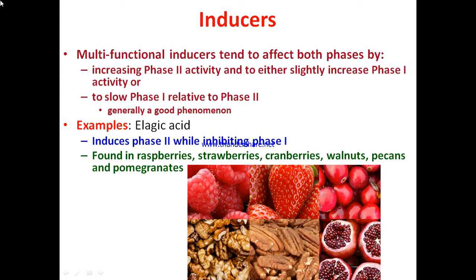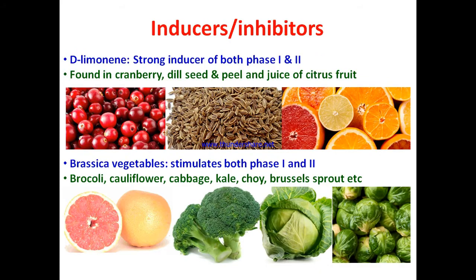Ellagic acid is an example of a multifunctional inducer — it induces phase two while inhibiting phase one. Ellagic acid is present in fruits and nuts like raspberries, strawberries, cranberries, walnuts, pecans, and pomegranates, so daily consumption of these foods provides better biotransformation efficiency. D-limonene is another strong inducer of both phase one and two, and is found in cranberry, dill seed, and the peel and juice of citrus foods.